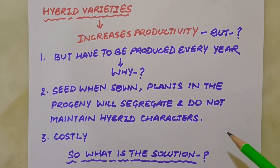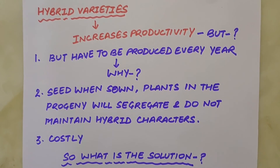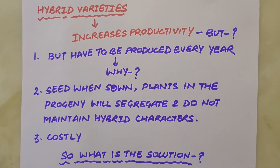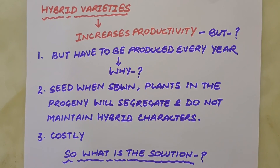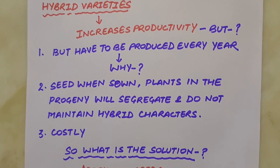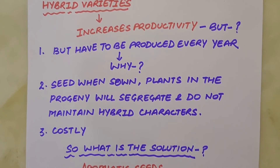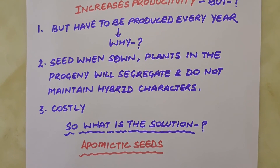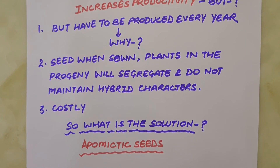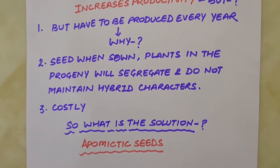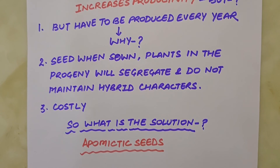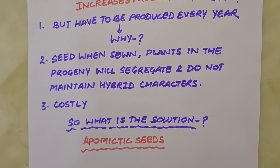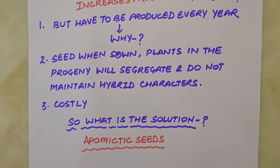Nowadays, hybrid varieties of several food and vegetable crops are being extensively cultivated. Cultivation of hybrid seeds has tremendously increased productivity. However, one problem with hybrids is that hybrid seeds have to be produced every year — if seeds collected from hybrids are sown, the plants in the progeny will segregate and do not maintain hybrid characters. Production of hybrid seed is also costly, making hybrid seed too expensive for the farmers. The solution is: if these hybrids are made into apomictic varieties, there is no segregation of characters in the hybrid progeny, and the farmers can keep using the hybrid seeds year after year without buying new seed annually.